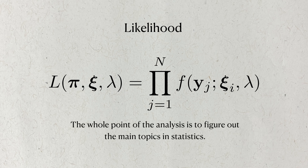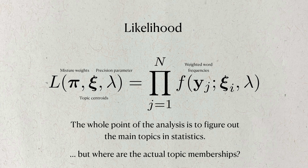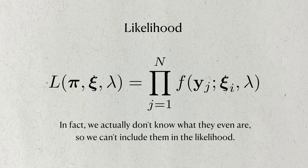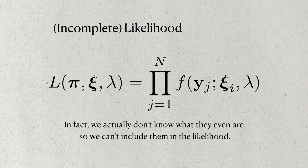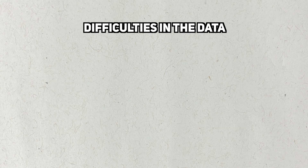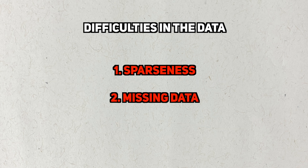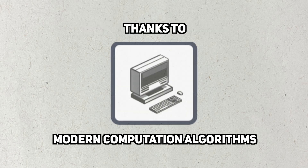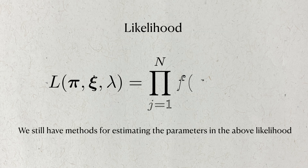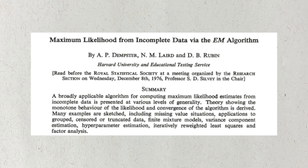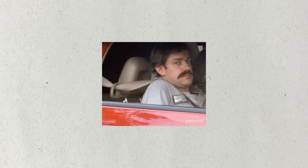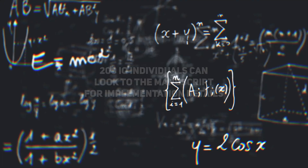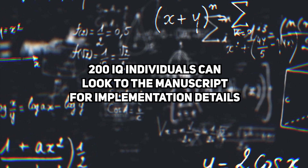We've talked a lot about topics and clustering, but where in this model are the actual topic memberships? We don't actually know what they are, so we can't use them in the likelihood. Not only do we have a sparseness problem, there's also a missing data problem. But thanks to innovations in algorithms and computing, we can still estimate the model parameters despite this missing data problem. Specifically, the authors employ the EM algorithm to fill in these missing cluster memberships and get the parameters that maximize the likelihood. For the hardcore among you, the technical details can be found in the original paper.